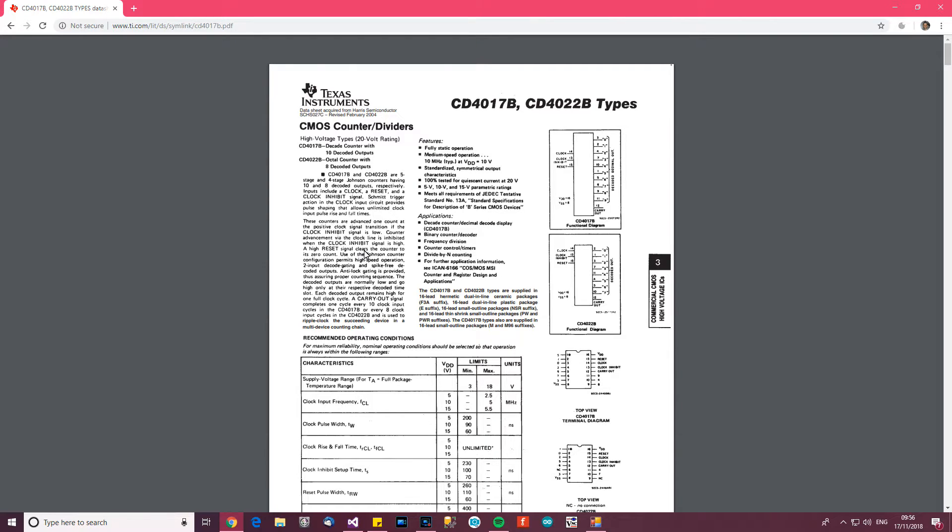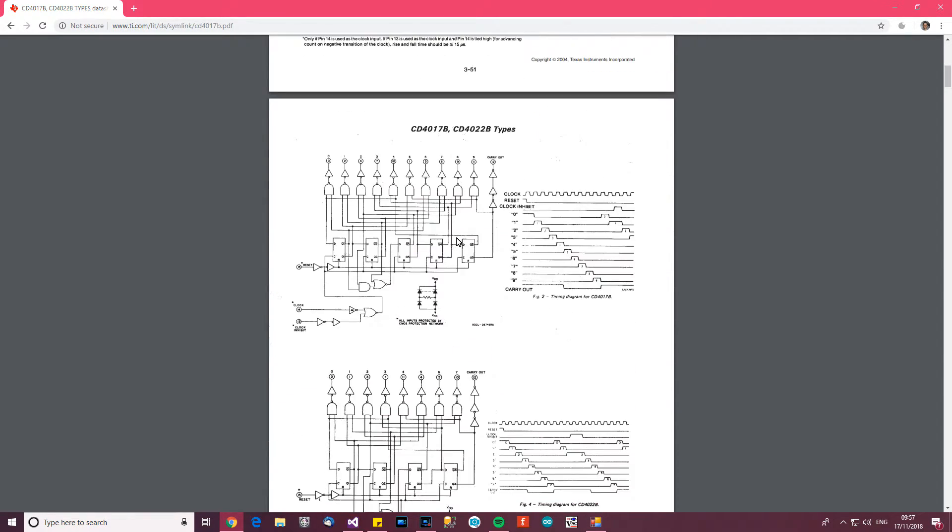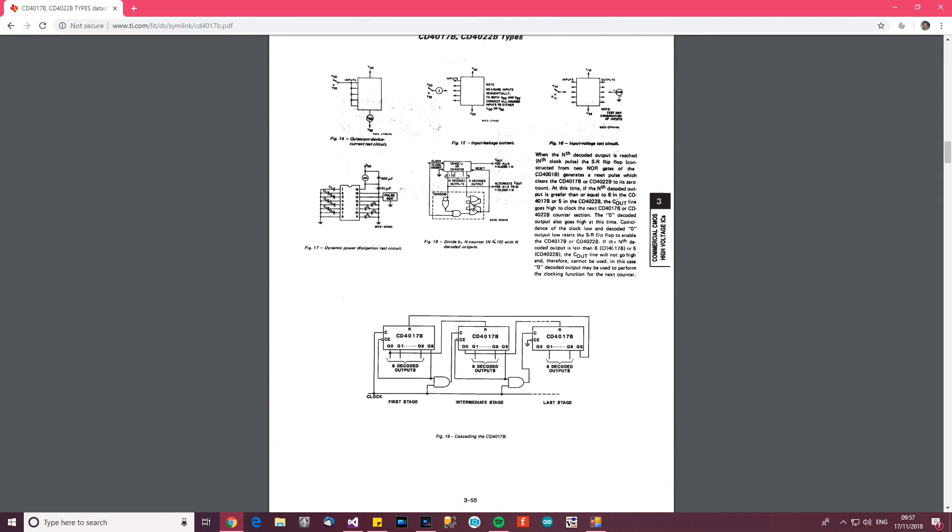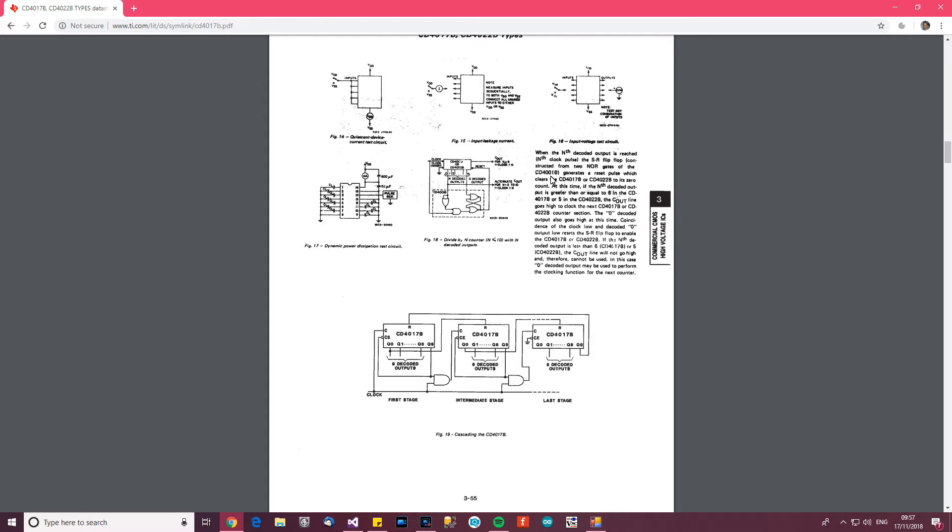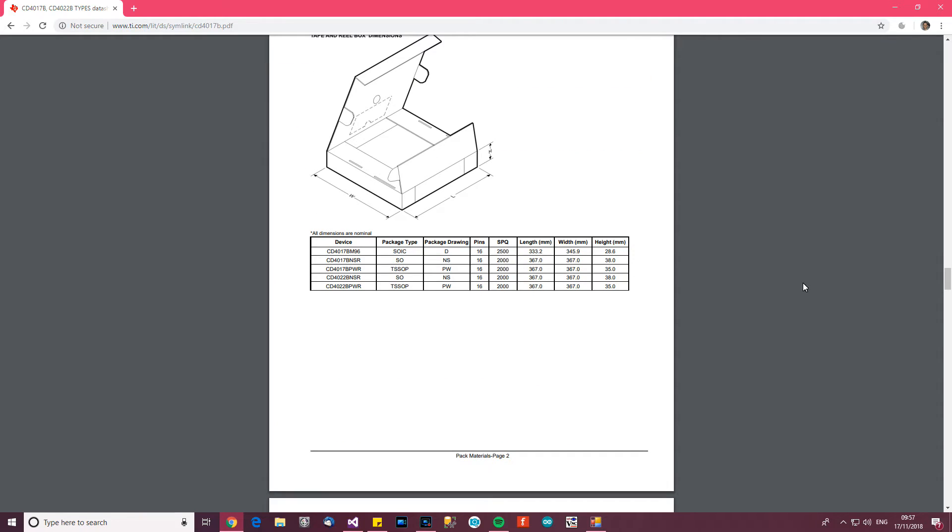So it's high-speed operation. Carry out a signal completes one cycle every ten clock input cycles, or every eight clock in that one. Yeah, so it's basically a counter. It seems to be counting something. Now, I think what it's doing is it's counting something random in order to get a random number between one to ten. At least, that's what I think it's doing.